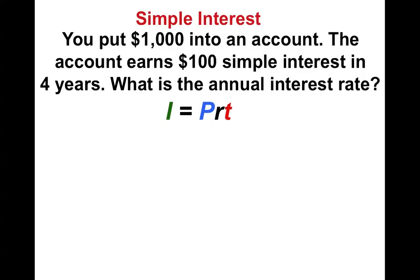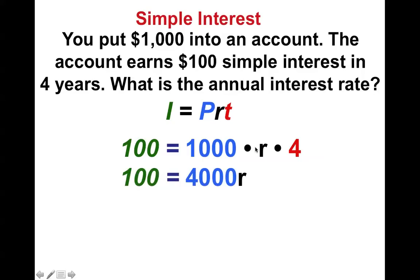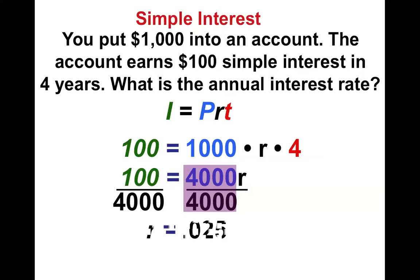Well, here's our formula. And notice it told us how much we earned, $100. We want to know what the rate is going to be. So we multiply 4 and 1,000 together and get 4,000, and we divide by 4,000. When we simplify we end up getting 0.025. That's the rate. However, rate is a percentage, so we move the decimal two spots to the right. One, two. And we get 2.5% interest.